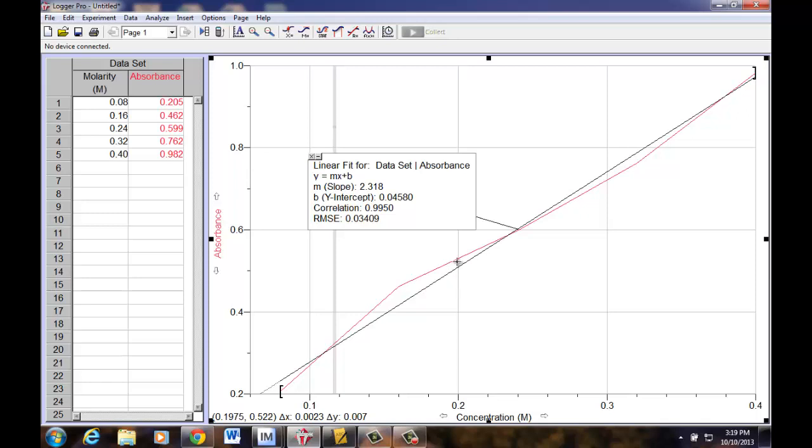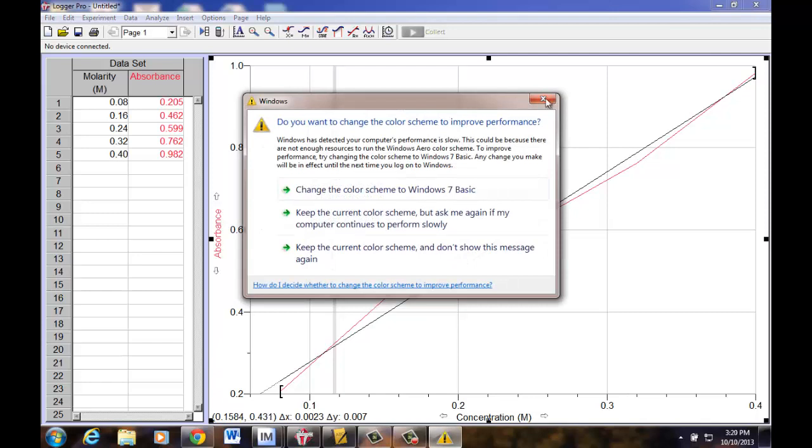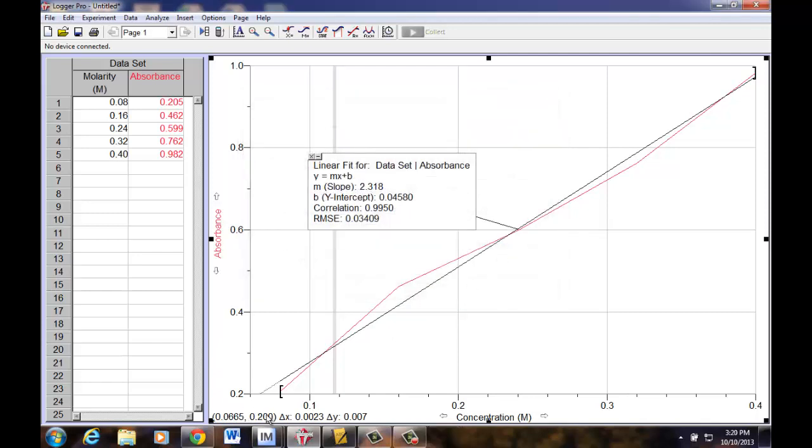There, right there. 0.525 is the Y, and again, notice where I'm looking. The cursor is on the red line, and what I'm hoping to do is just bring your eyes right here, where the X and the Y are. So here we go. 0.525, and I just want to simply read what the X value is at that time.